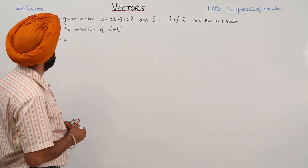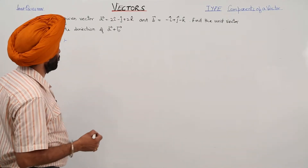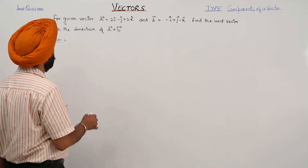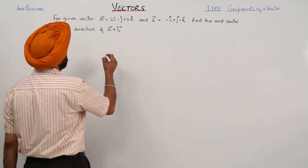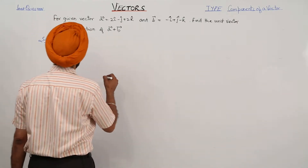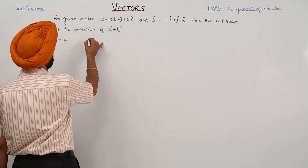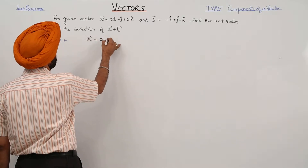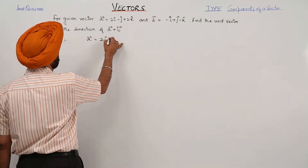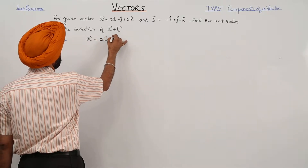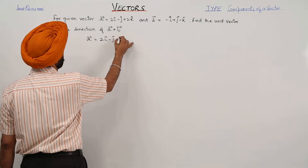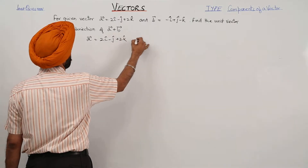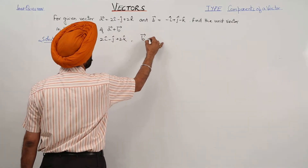In the given question, we have to find the unit vector in the direction of vector A followed by vector B. Now vector A is equal to j cap plus 2k cap and vector B.